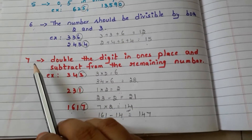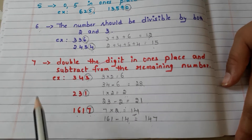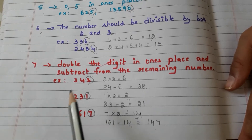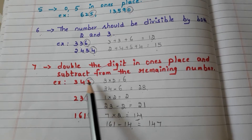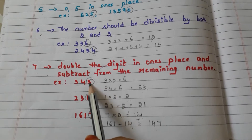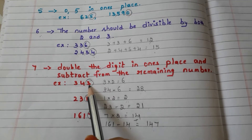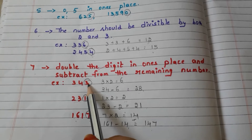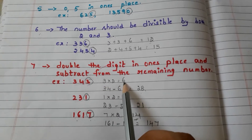First we are looking at the divisibility rule for 7. We will do this with an example. The example number is 343. Take the last digit, that is 3. We have to double that digit, meaning we multiply it by 2. 3 times 2 is 6.